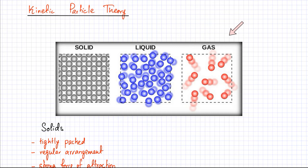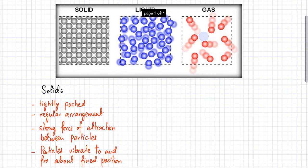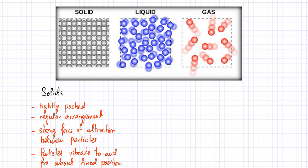I'm going to first cover the properties of particles in solid state. Whether a substance is made up of molecules, compounds, or has a lattice of positive metal ions, I'm going to treat all of them in a more general way and think of them as particles present in solid state. When particles are present in solid state, the first thing is that they would be close together and tightly packed.